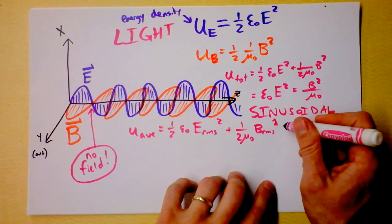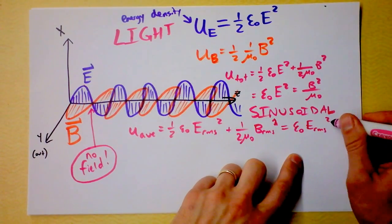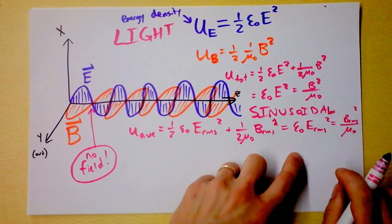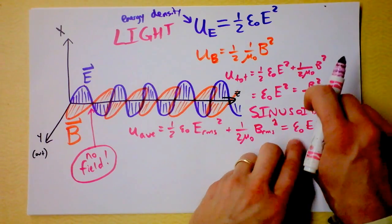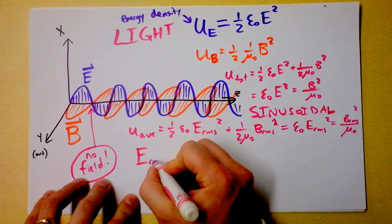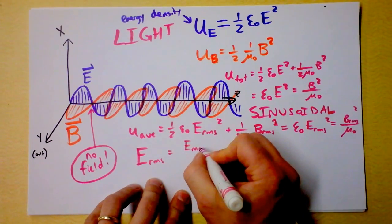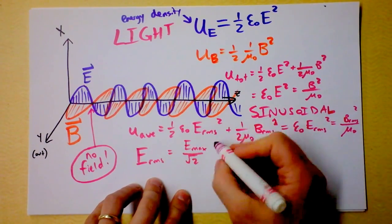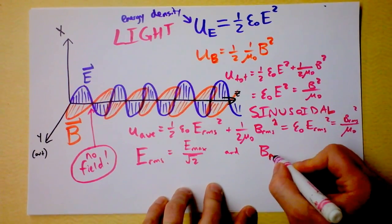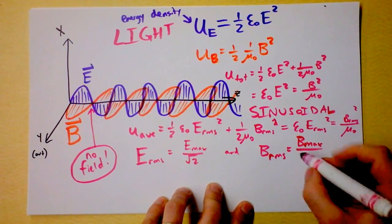This is also ε₀E²ᵣₘₛ and that's the same as B²ᵣₘₛ/μ₀ because of the same argument we had before. For all sinusoidal structures we know that the RMS value is simply dividing by root two. If we find the maximum electric field we can divide it by √2, and the RMS value of the magnetic field is the maximum value of the magnetic field divided by √2 again.